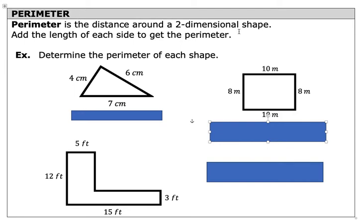Perimeter is the distance around a two-dimensional shape. Add the length of each side to get the perimeter. This is a good time to pause this video if you are already confident and you want to try to calculate the perimeter of each object.